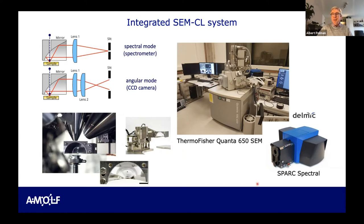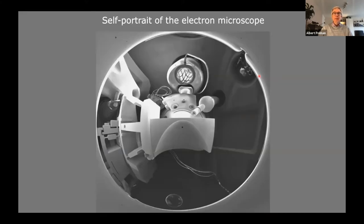Later we founded a company, Delmic, that turned this into a commercial product. That's the box you see here — about 30 centimeters in size — it has all the spectrometers. A typical CL microscope now looks like this photograph: a Thermo Fisher Quanta SEM, and the blue box at the end has all the spectroscopy that collects and analyzes the light. This is what it looks like from the inside — an SE image showing all the elements inside: the parabolic mirror with a little hole, the EBSD, the EDX detector, optical window, and SE detector.